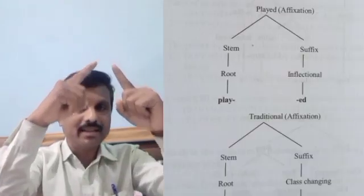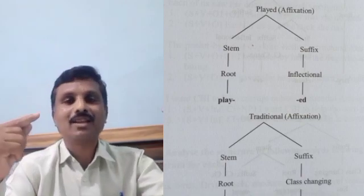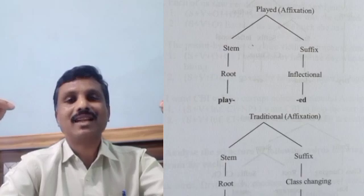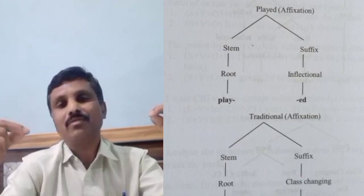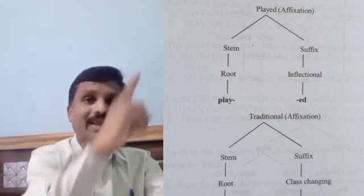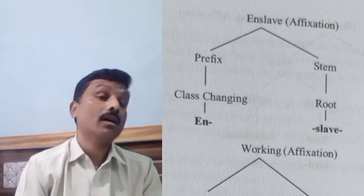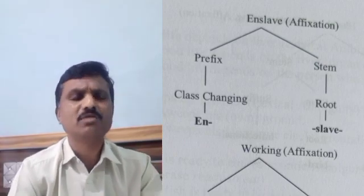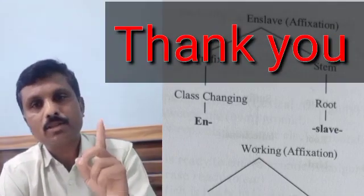In textbooks, this is represented in tree diagrams using binary cuts. You write the word, cut it into two parts, and on one side write 'root/base' and on the other write the type of suffix or prefix — class changing, class maintaining derivational, or inflectional. This concludes the process of affixation.